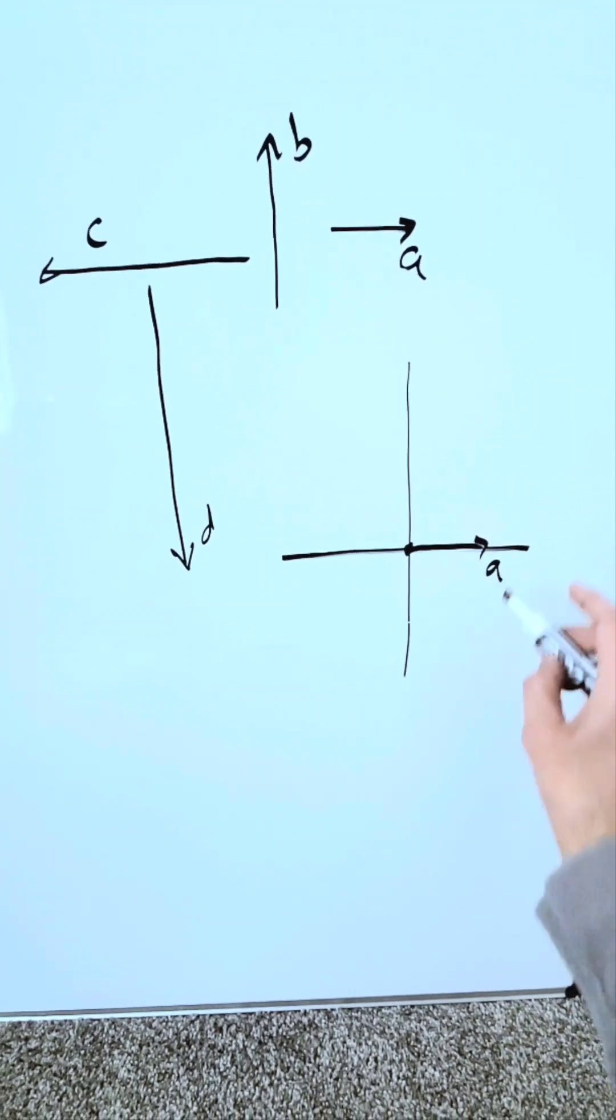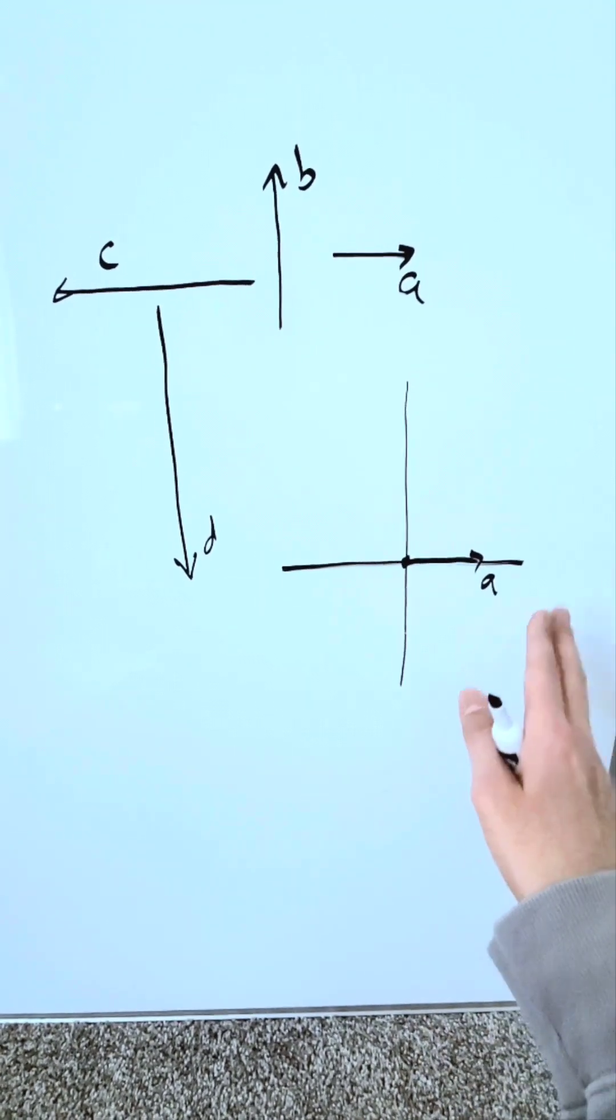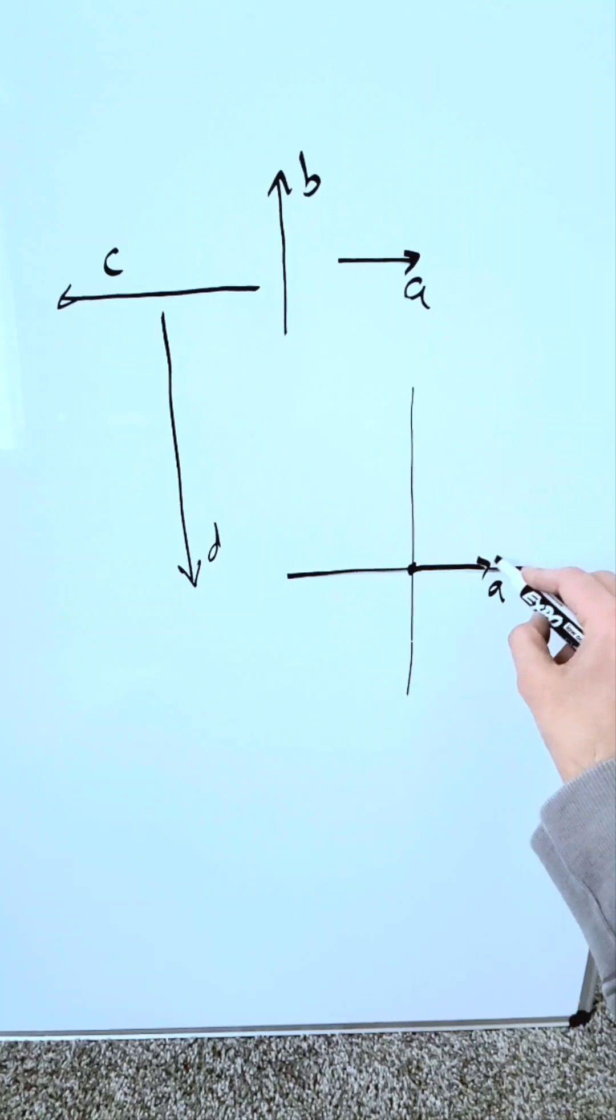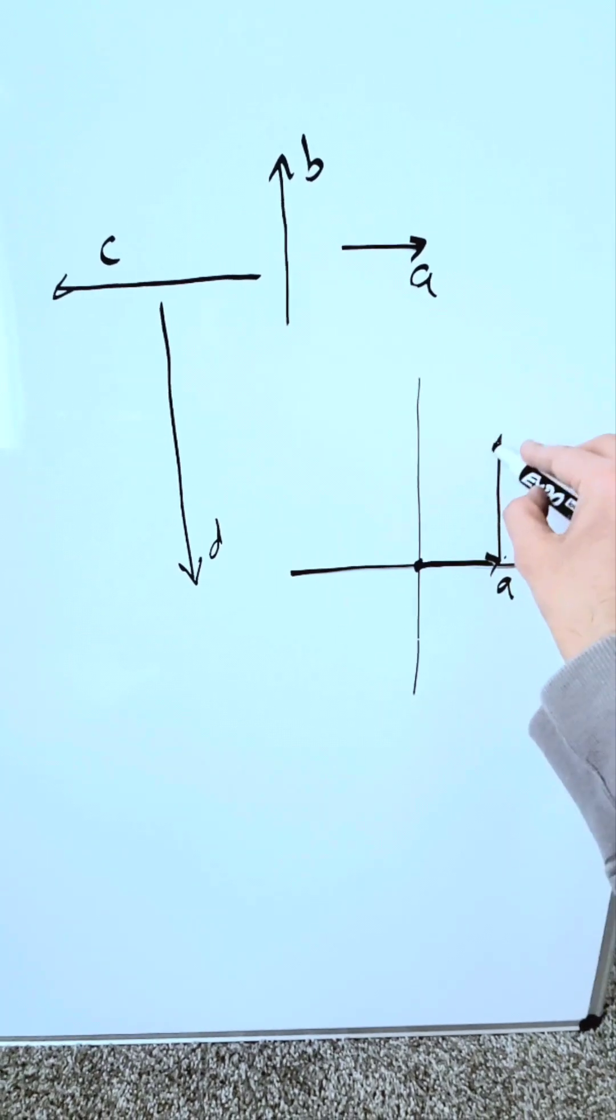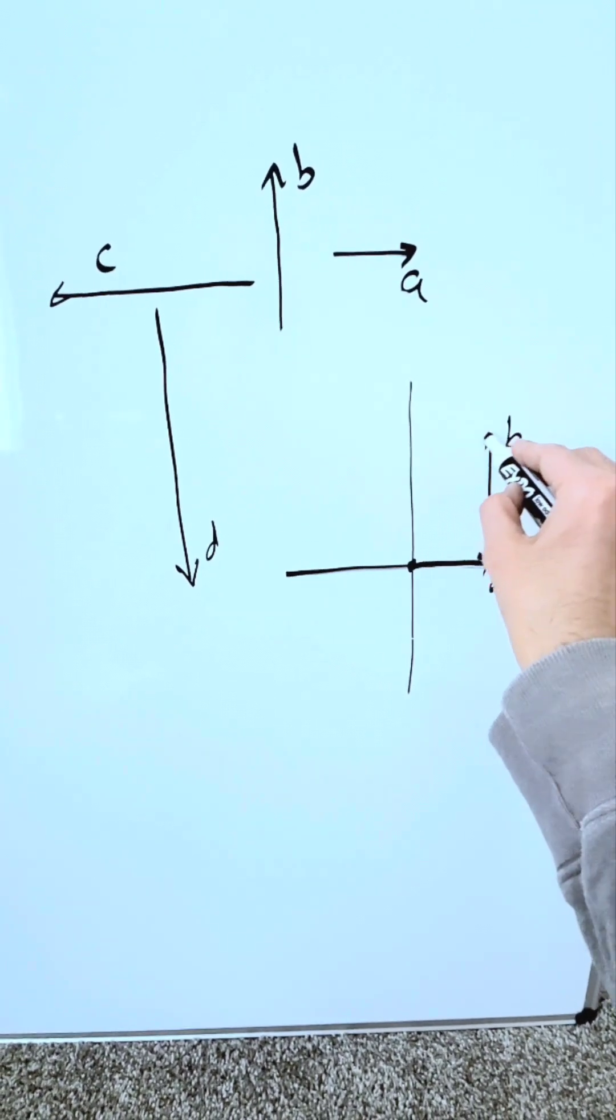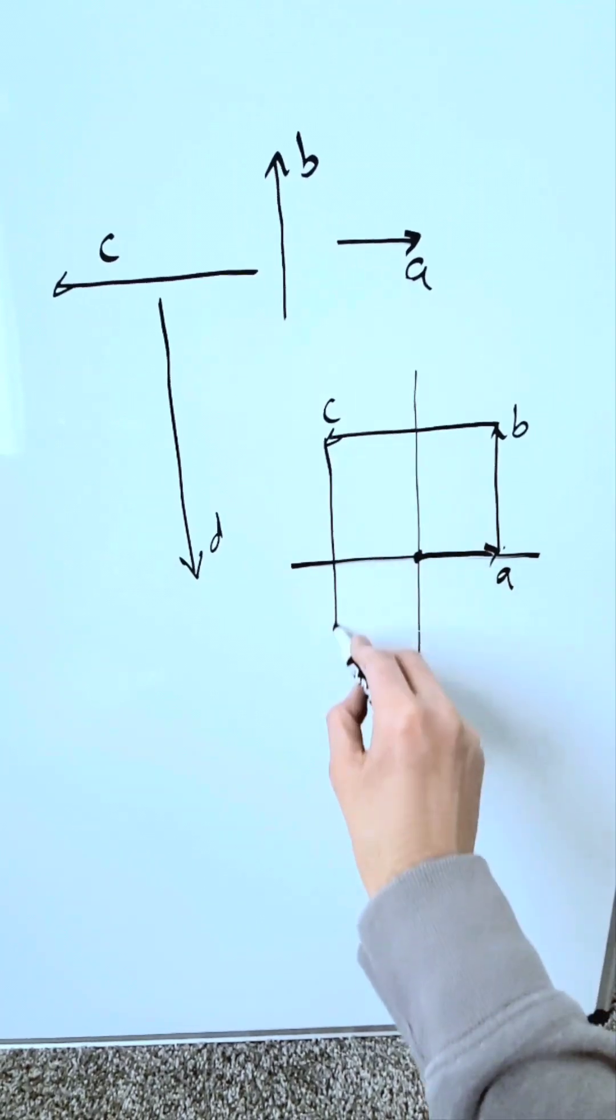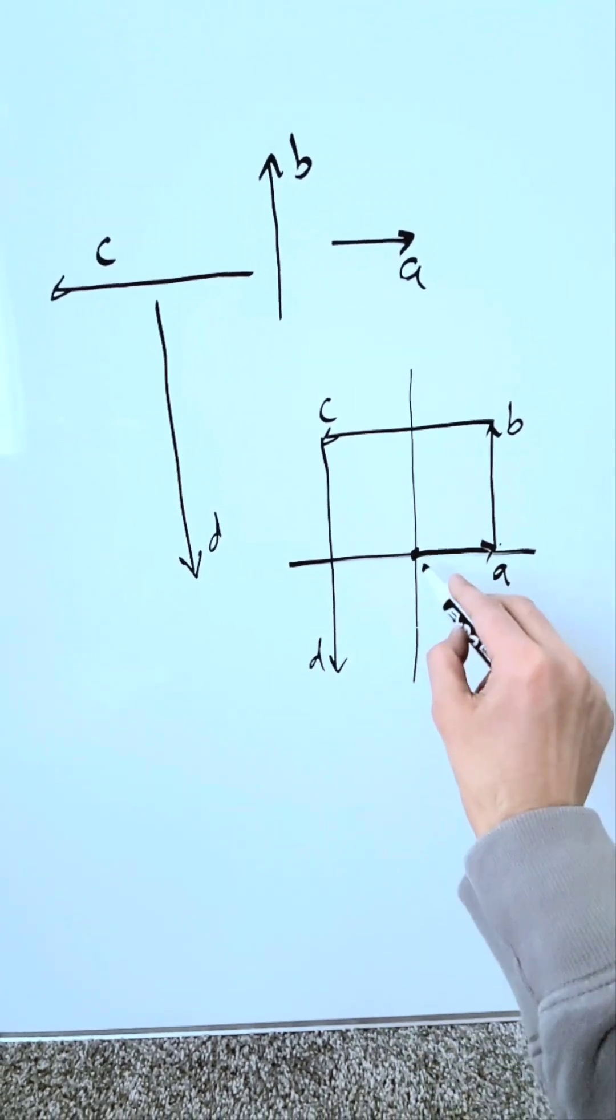I'm going to order the addition here as A plus B plus C plus D. I'll be accurate in my representation. Here's my B coming from the tip of A. From B, I'm drawing C, and it's looking like this. From C, I'm drawing D, and it's coming over here, and here it is.